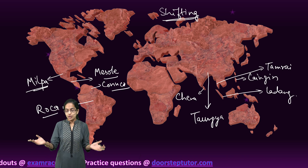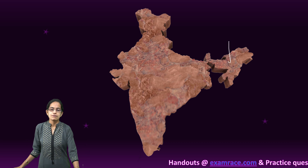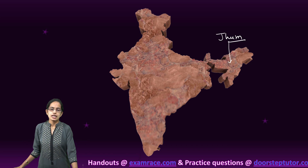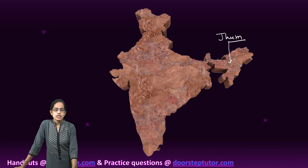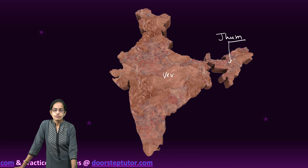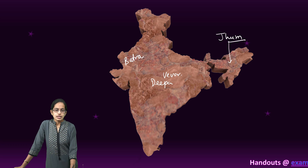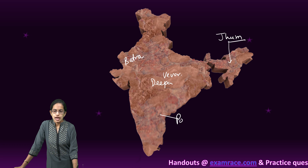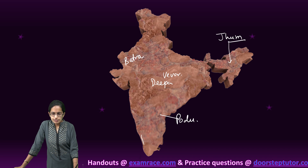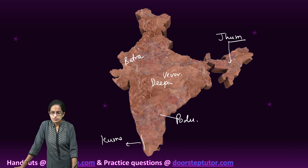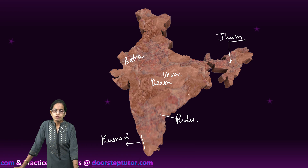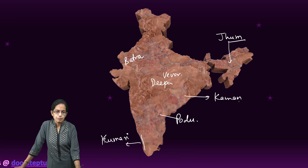In India itself, shifting cultivation is named differently across regions. In northeast India it is called jhum cultivation; in Bundelkhand it is called bewar; in the Bastar district it is called dipa; in Rajasthan it is known as batra; in Andhra Pradesh it is known as podu; and in the western Ghats of Kerala it is known as kumari.